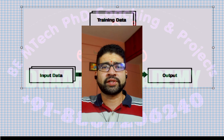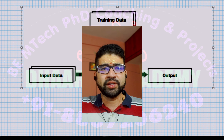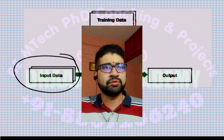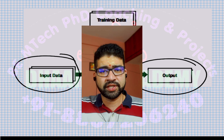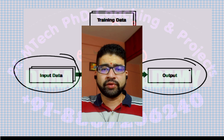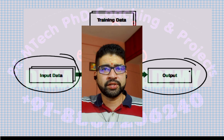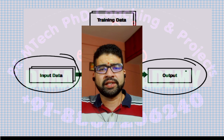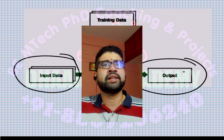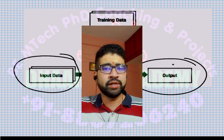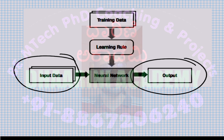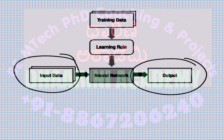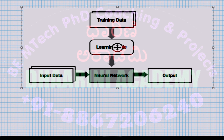In the testing phase, we give some input data to the network, which generates an output. You check whether that output is correct or not. If it is correct, it's a positive score. If not, there is some issue with the training — maybe you opt for another level of training, add more training data, or change your learning rule. We can do a lot of processing to make changes.